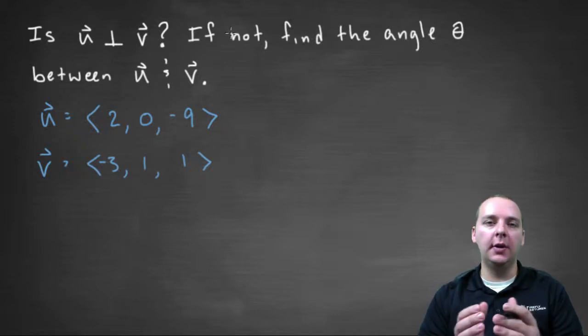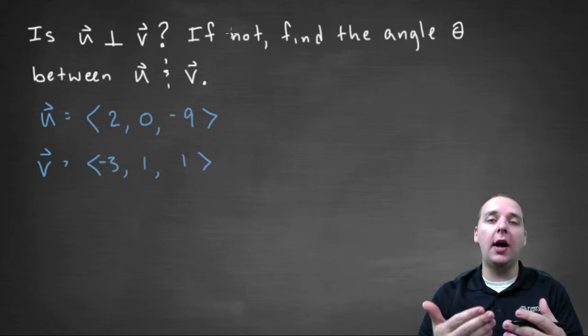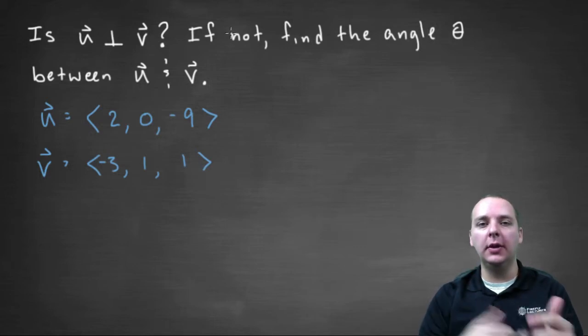Here we are being asked to determine if two vectors are orthogonal to one another, and if they are not orthogonal then we want to find the angle between them.